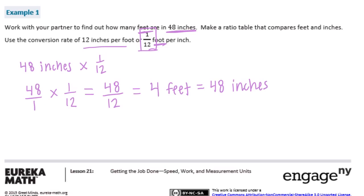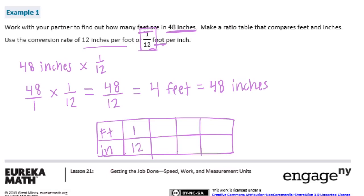And it does say to make a ratio table. So we could just... Let's do feet and inches. So we know that 1 foot is 12 inches. 4 feet is 48 inches. And then we can just fill in the blanks. Because we know that we can just multiply it by 12. So there's a ratio table.